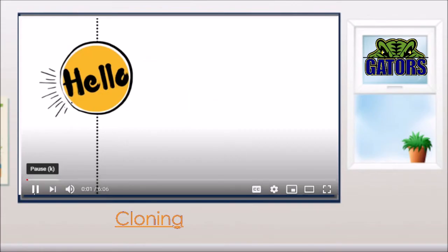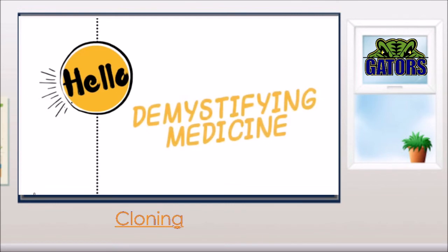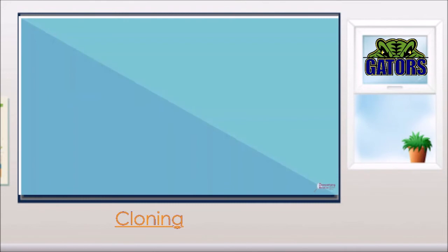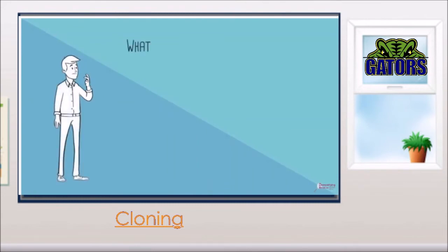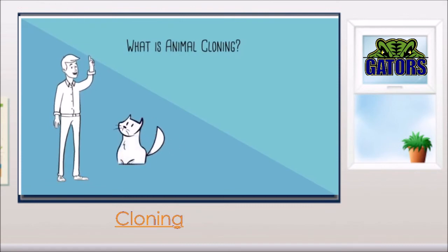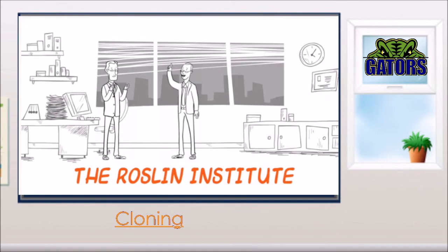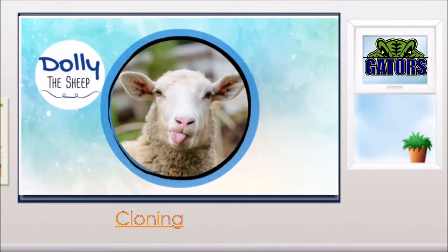Welcome to another episode of Demystifying Medicine. In this episode, we will be exploring the world of animal cloning. Although the topic of animal cloning is controversial, researchers and scientists have argued for ways in which cloning can be useful. According to the US Food and Drug Administration, cloning is a complex process that lets one copy the exact or inherited traits of an animal. Most famously, scientists at the Rosslyn Institute, who were attempting to develop a new method for producing genetically modified livestock, cloned a sheep named Dolly.